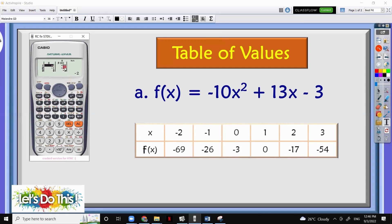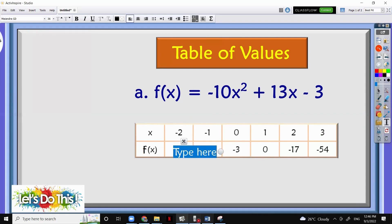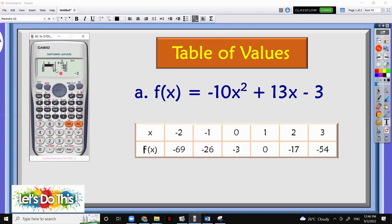As we can see, negative 2 for the f of x is negative 69. And then we have negative 1, we have negative 26, 0. We have negative 3. Let's go down.